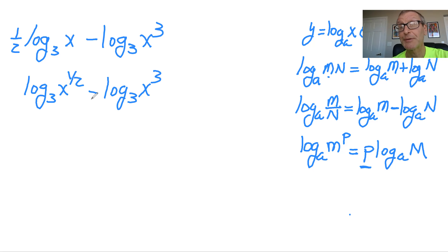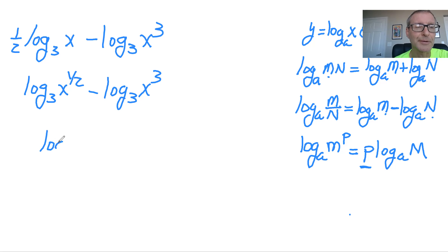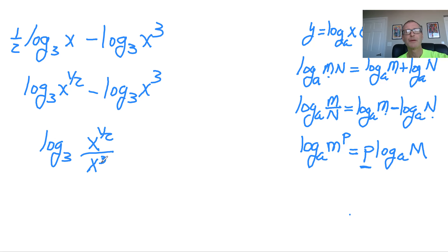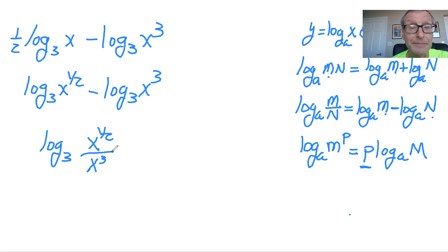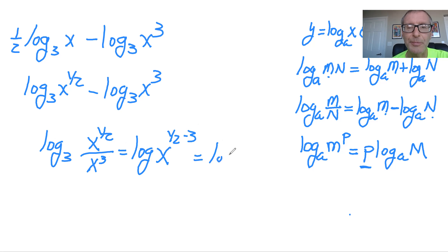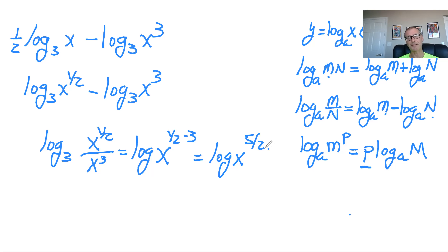Now we have a minus between the two logs, so we use the quotient rule. N is x cubed going to the denominator, and M is the square root of x (x to the one-half) going to the numerator. That gives us log of x to the one-half over x cubed. Now we can use the laws of exponents: x to the one-half divided by x cubed equals x to the one-half minus three. One-half minus three is negative five-halves, so that's log of x to the negative five-halves power.